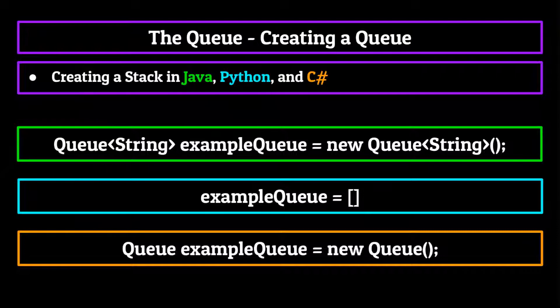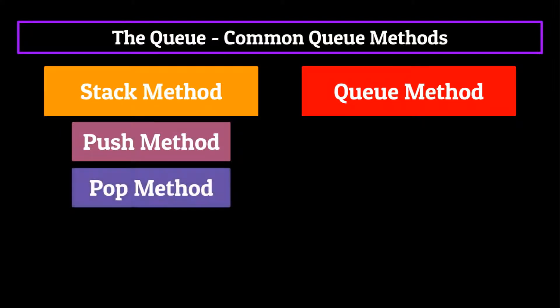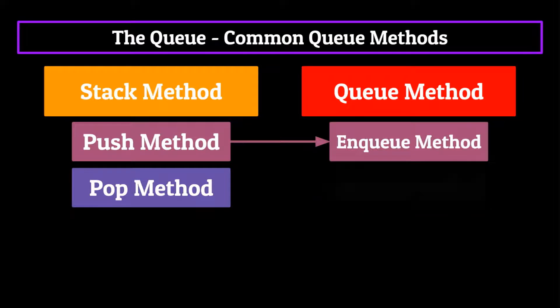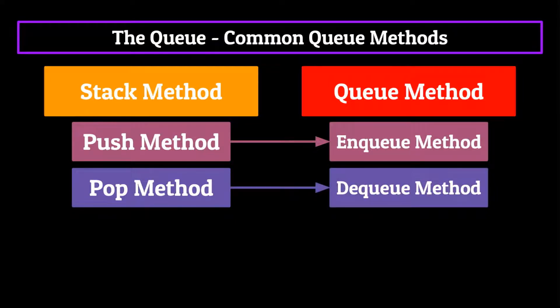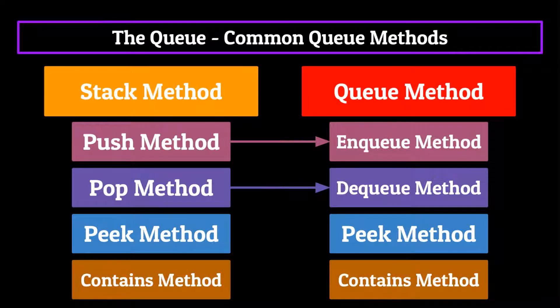Alright, let's take this example queue we've just made and talk about some common queue methods. So just like the stack, we're going to have two methods used to add and remove elements from the queue. For the stack, we added elements with push and removed them with pop. For the queue, we add elements using enqueue and remove them using dequeue. In addition to these two, we're also going to be covering peak and contains, which if you watched the previous segment should look pretty familiar.